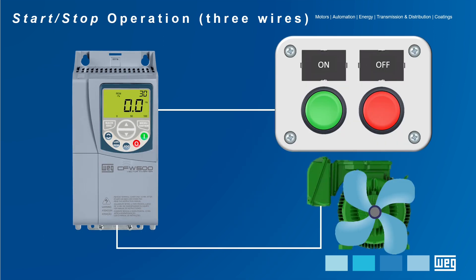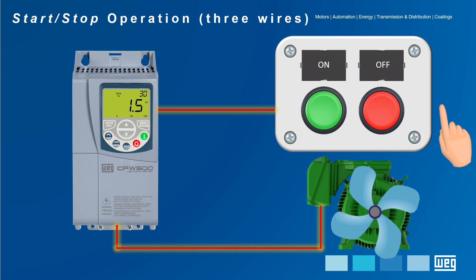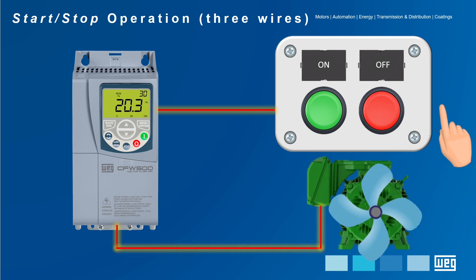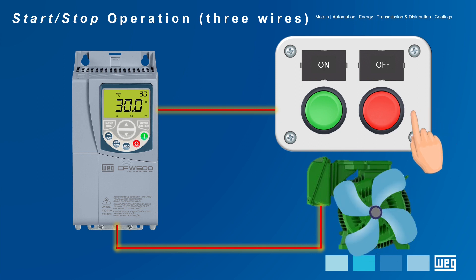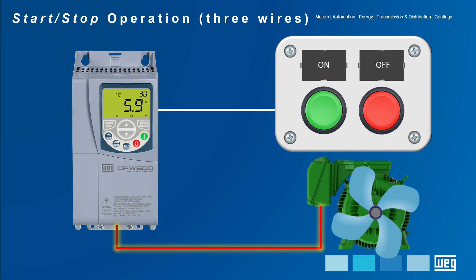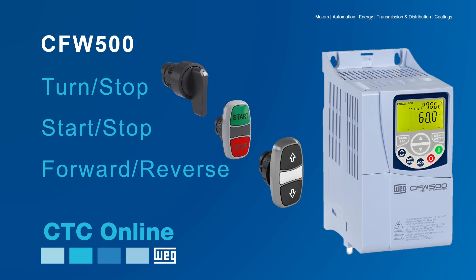In this operation representation it can be observed that a PULSE on the ON button is enough for the drive to start the motor without the need for external accessories to keep the motor in operation. To turn it off, all that is needed is a PULSE on the OFF button so the normally closed contact opens and the drive turns the motor off respecting the deceleration ramp.